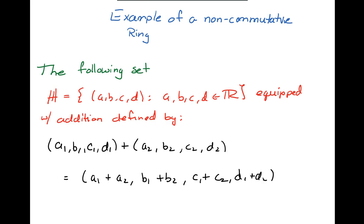So here's an example. If we take H with a double bar on it, four component vectors with the components a, b, c, and d all as real numbers equipped with addition defined the usual way that we sum the components up term by term, then we have the abelian group property under plus.